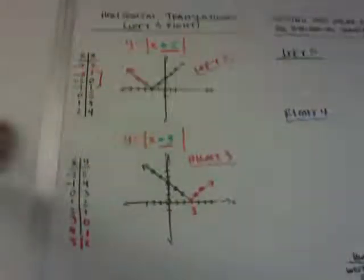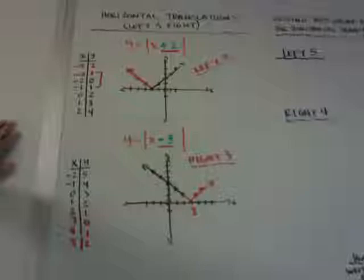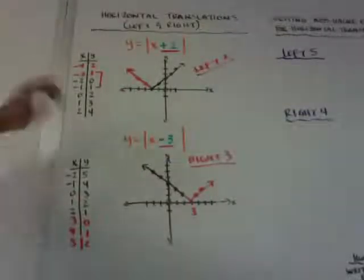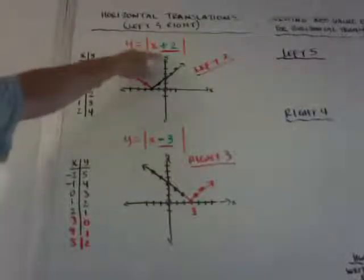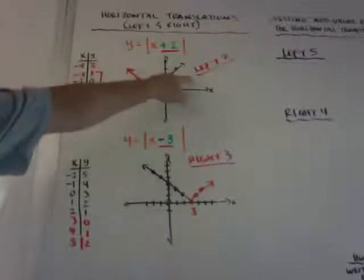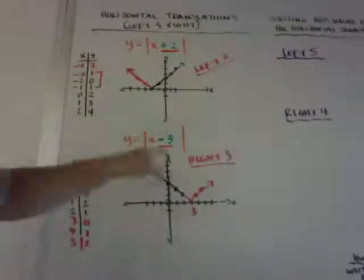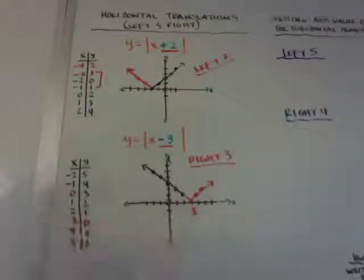So be careful with vertical. The plus 2 on the outside went up 2. But the plus 2 on the inside for horizontal actually goes left. It goes opposite. And again, minus 3 goes to the right.